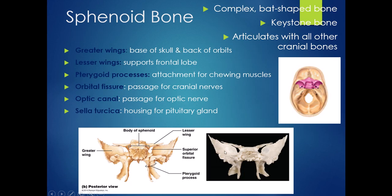Looking at the sphenoid bone, it's a really complicated-looking bone — very complex, with a bat or butterfly shape. It sits in the skull making up some of the base of the skull and some of the back walls of the eye sockets. The sphenoid bone is considered the cranial bone keystone, meaning all of the other cranial bones — the occipital bone, the temporal bones, etc. — all connect to the sphenoid bone somewhere because of its very complicated shape.